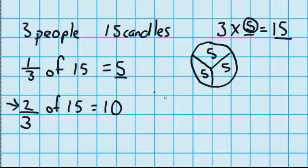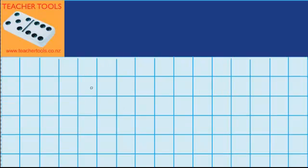And we can check that on our picture. 2 thirds would be this one here, and this one here. If I add those together, I get 10.